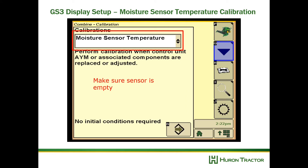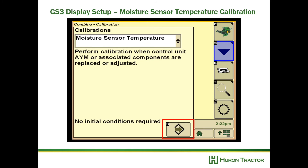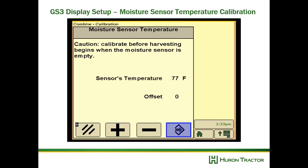Next we want to do our moisture sensor temperature calibration. First, make sure the moisture sensor is empty — take out the two pins at the bottom of the sensor, remove the little auger, make sure everything's empty, put it back together, and then proceed with the calibration. This calibration ensures the temperature is reading correctly — offset it so that the sensor temperature measures the same as the ambient temperature outside the combine.